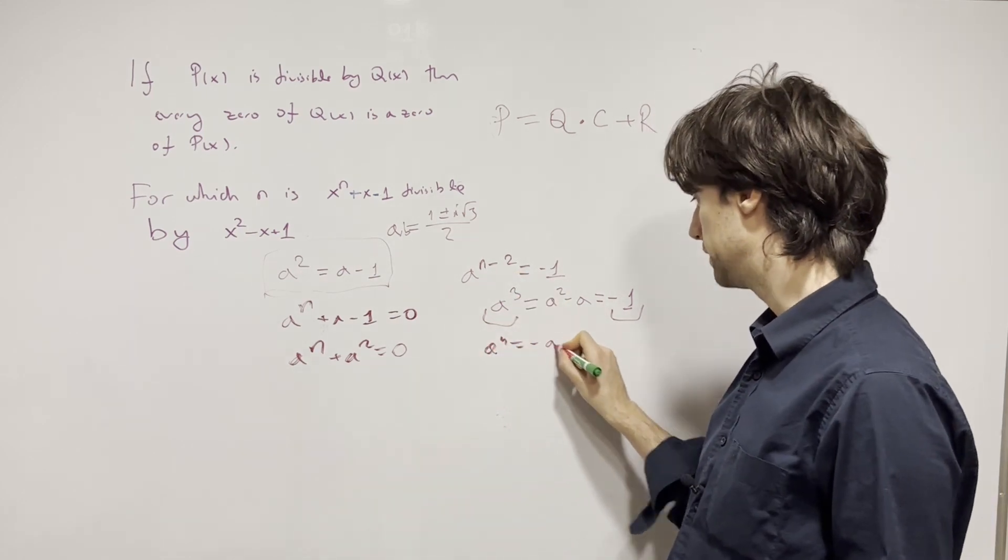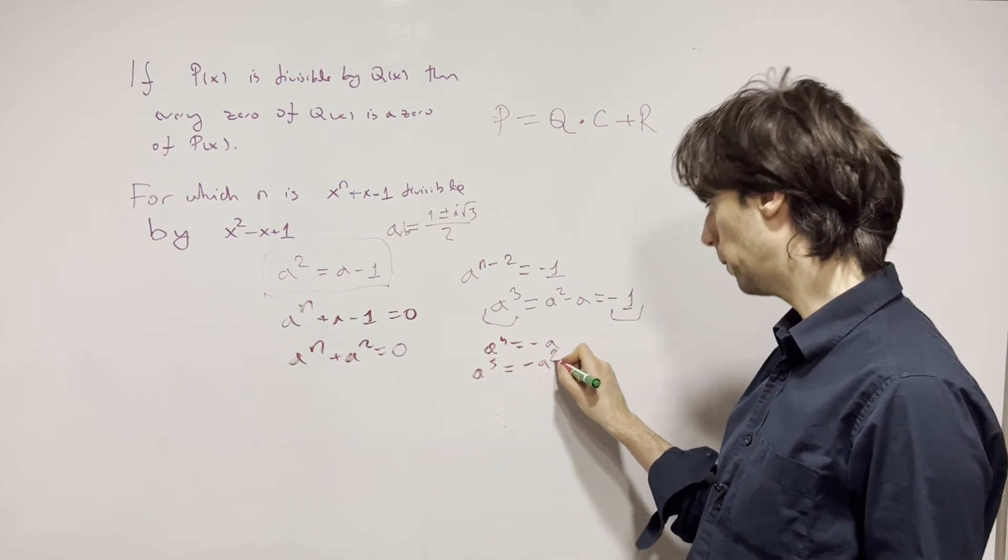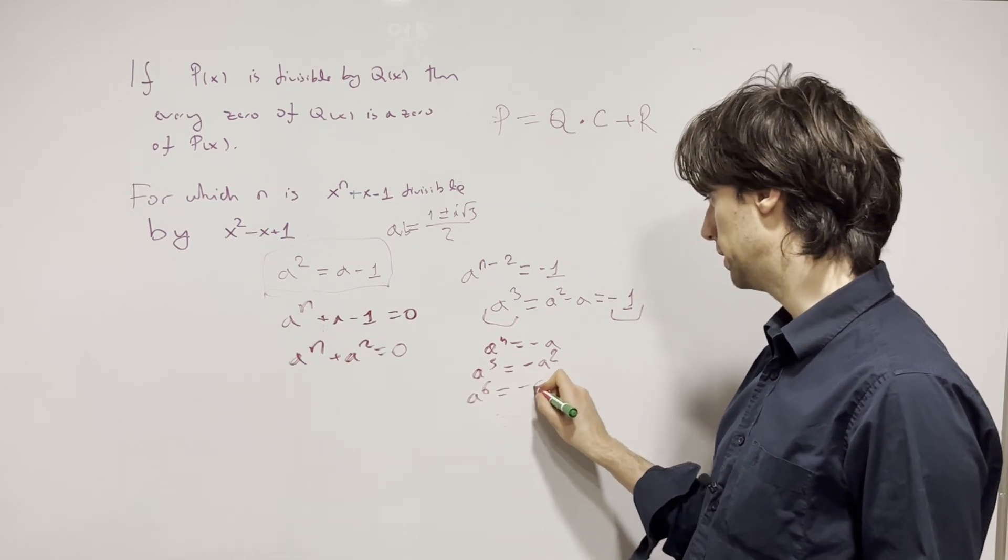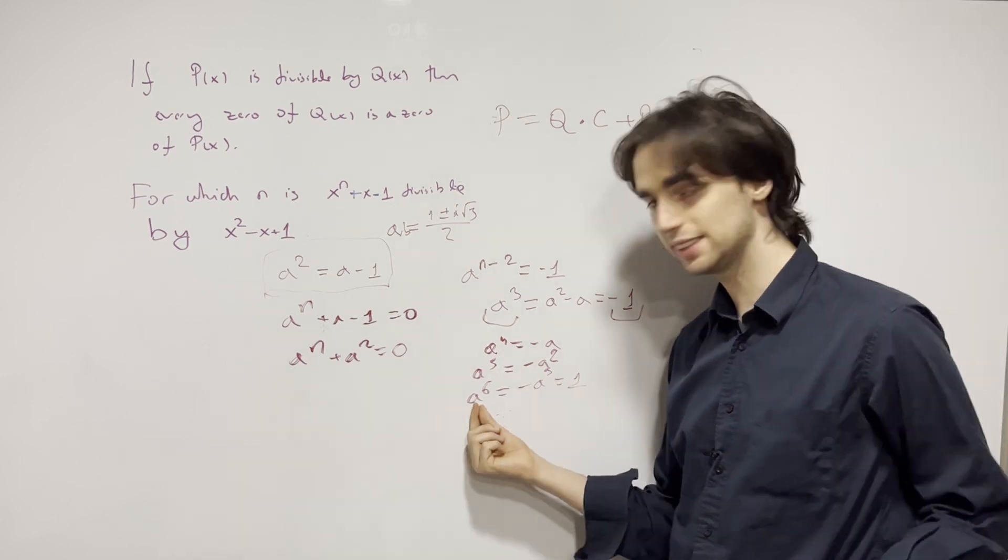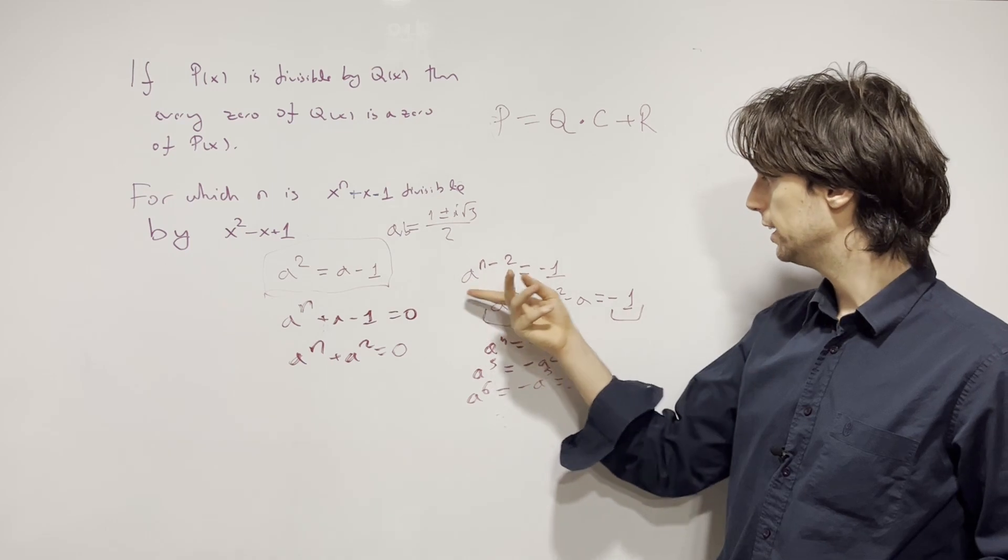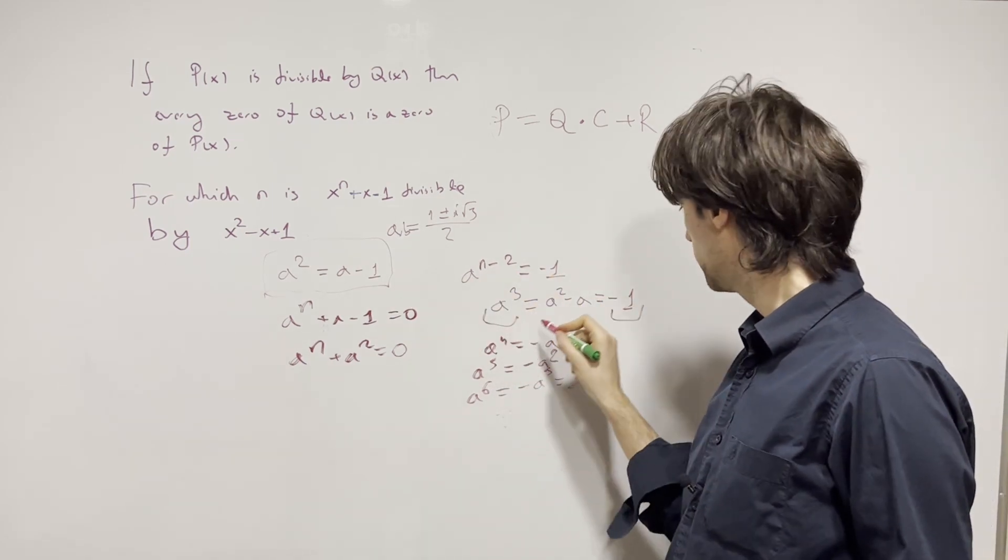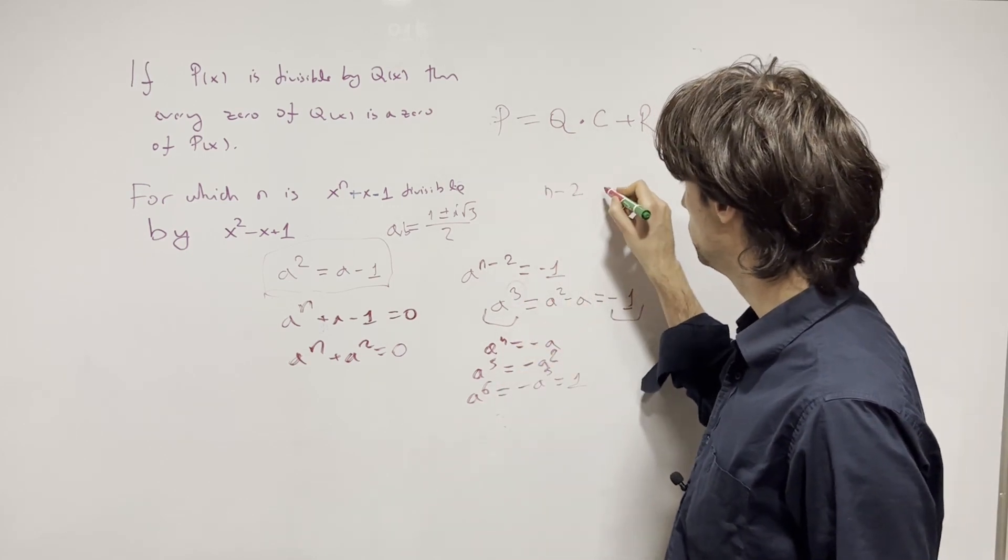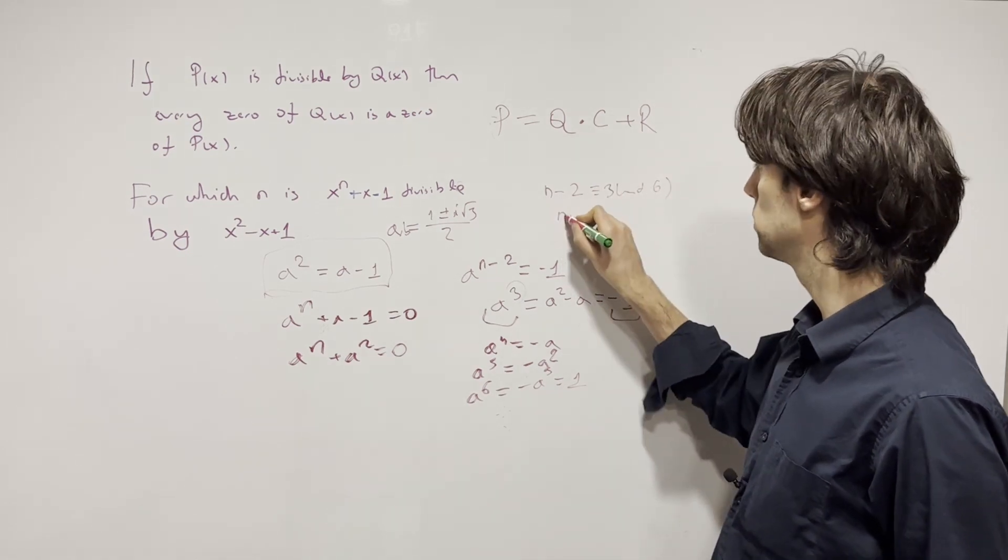This also means that a^4 is going to equal minus a, a^5 is going to equal minus a squared, and then a^6 is minus a cubed, which equals one. So this has a period of six, and it's minus one when n minus two gives us a remainder of three when divided by six.